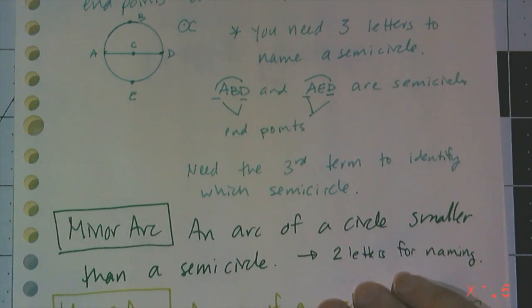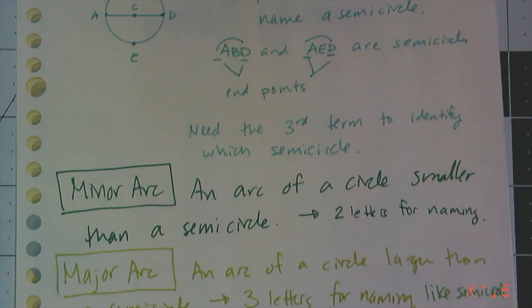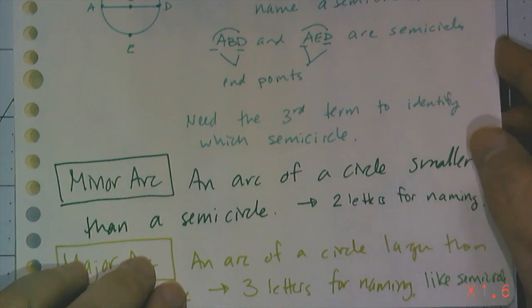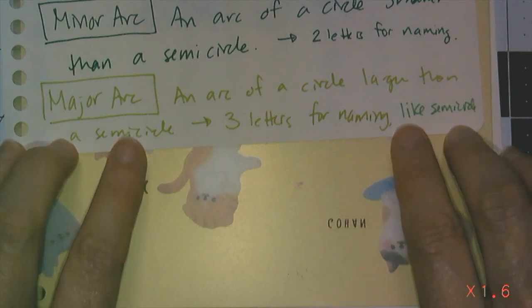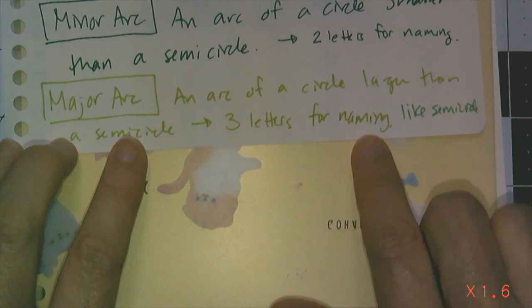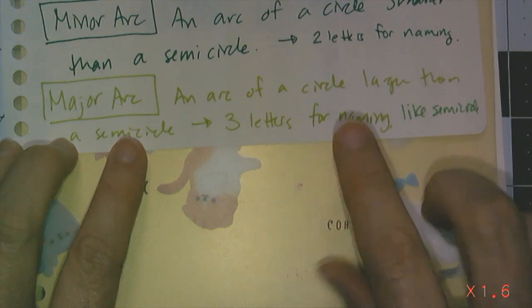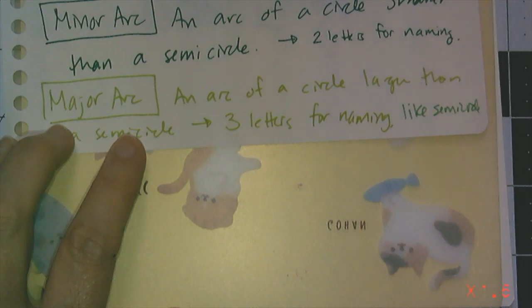Now a minor arc happens to be an arc that is smaller than a semicircle, and I only need two letters to name those. So in the first example I gave for just the definition of the arc of a circle, that arc AB was a minor arc, only needs two letters. Now a major arc, by contrast, is an arc of a circle that is larger than a semicircle, and just like a semicircle, we need three letters for naming major arcs. So three letters for major arcs, two letters for minor arcs, three letters for semicircles. That's the naming convention for arcs.